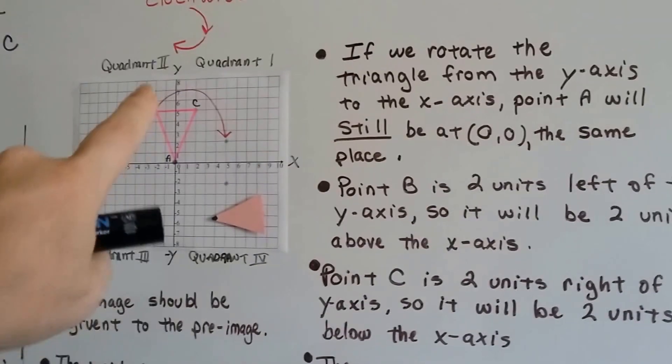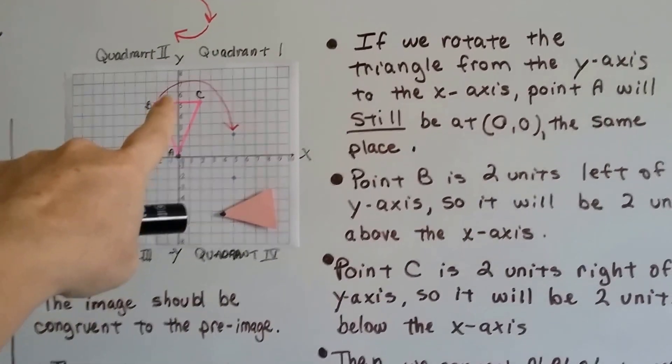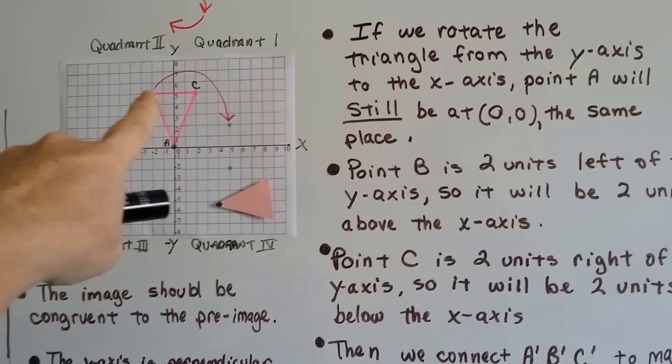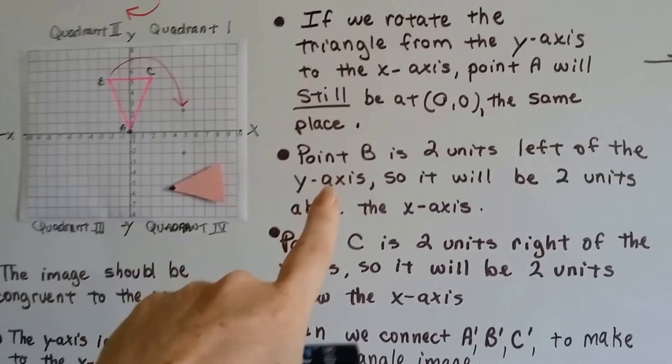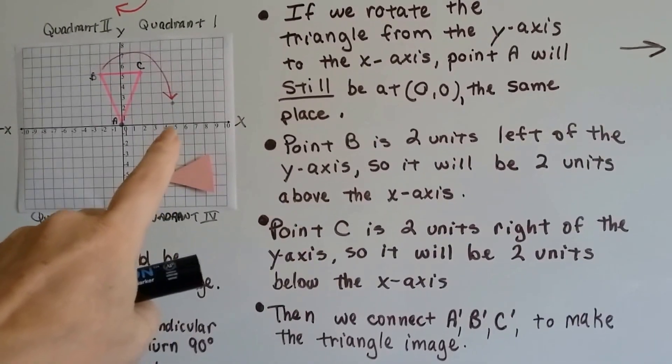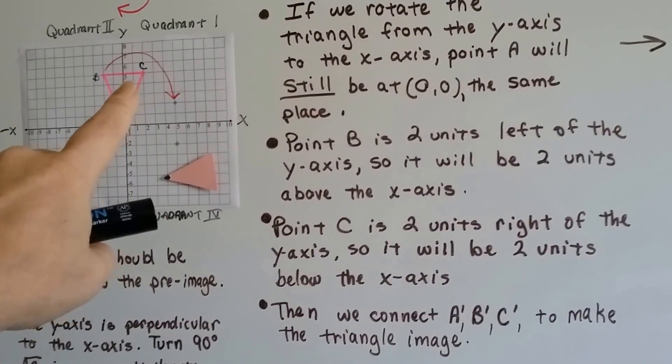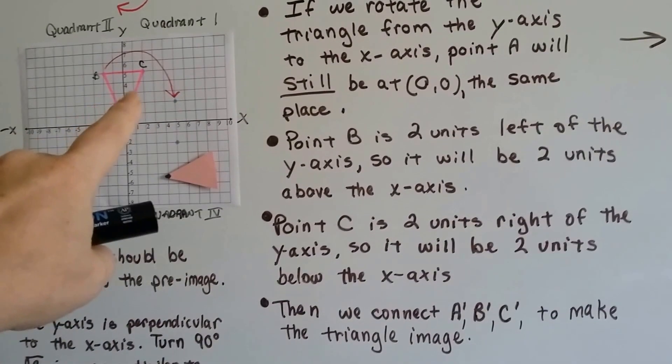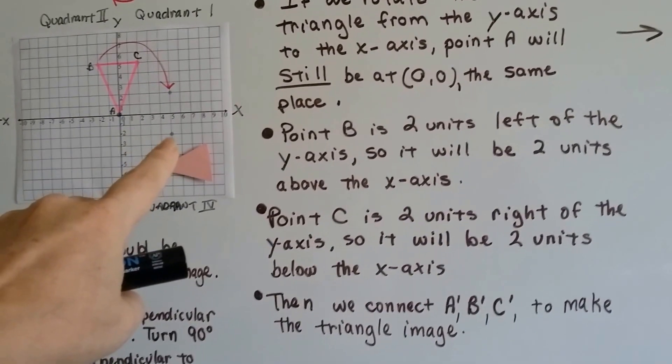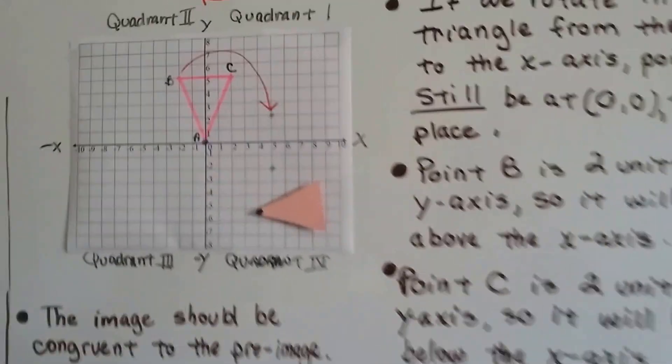So, point B is two units to the left of the y-axis, see that? One, two. So, it's going to be two units above the x-axis. One, two. And point C is two units to the right of the y-axis, so it's going to be two units below the x-axis. See that?